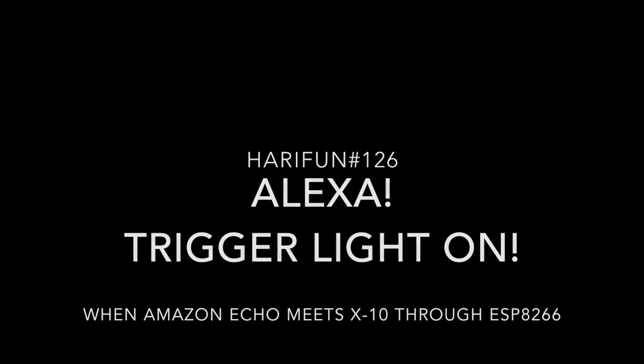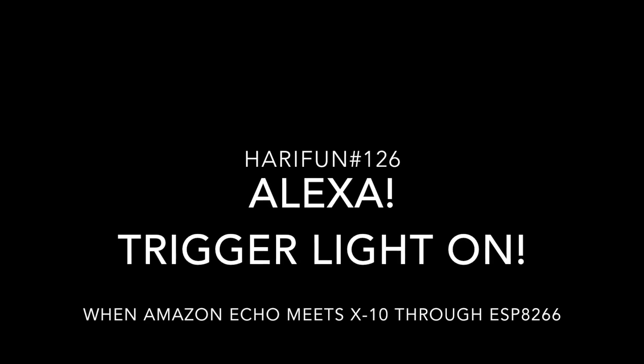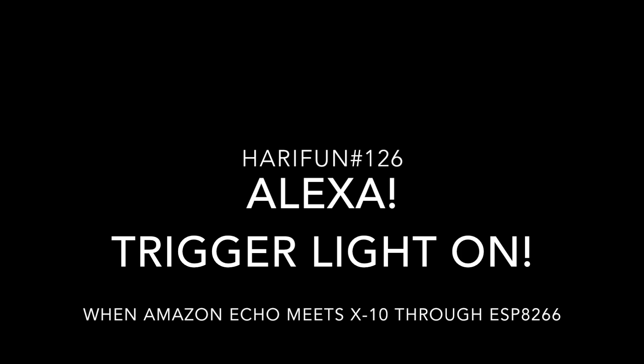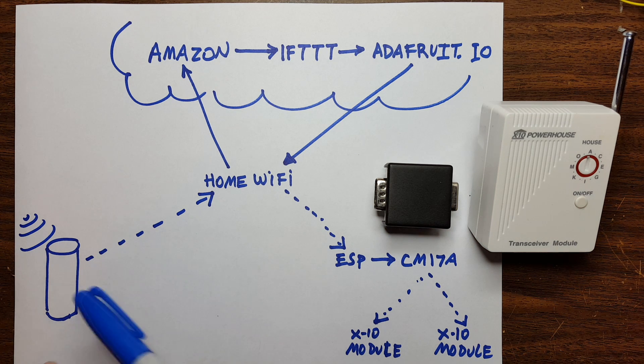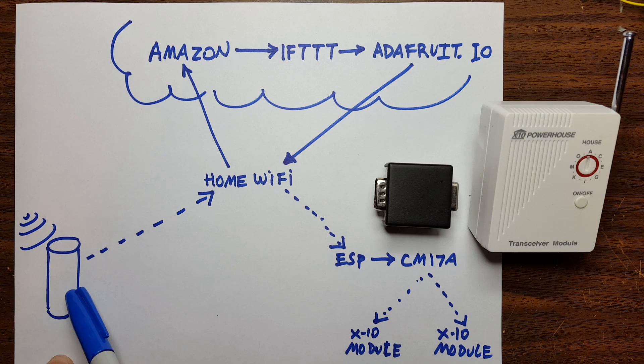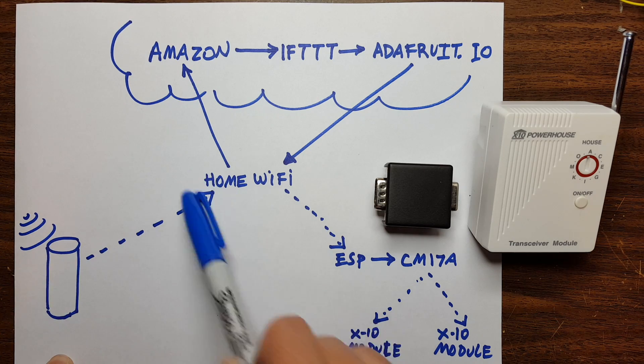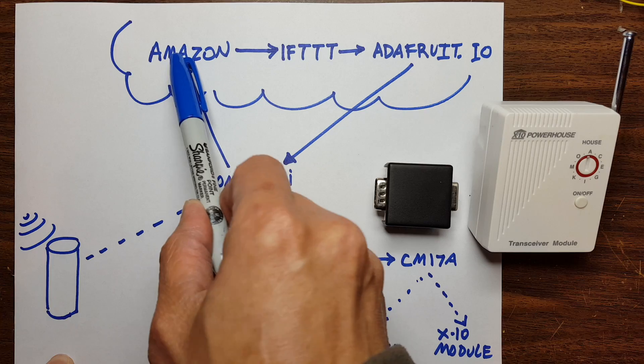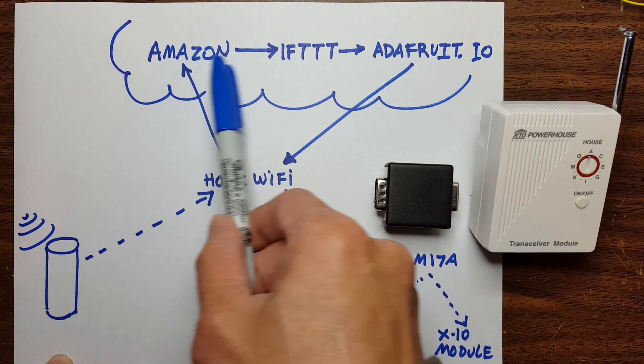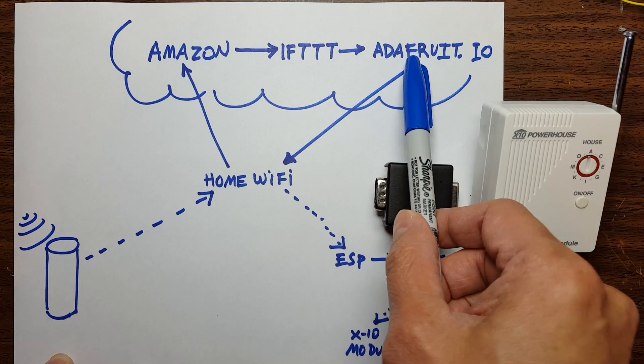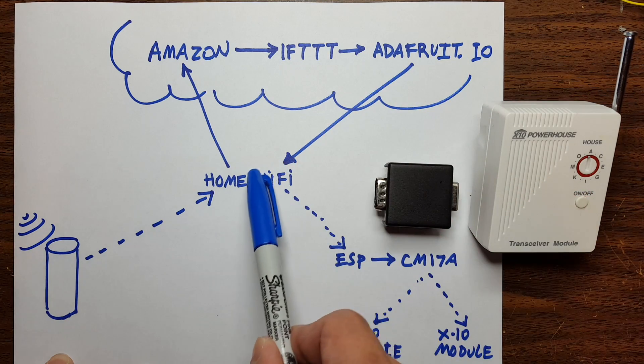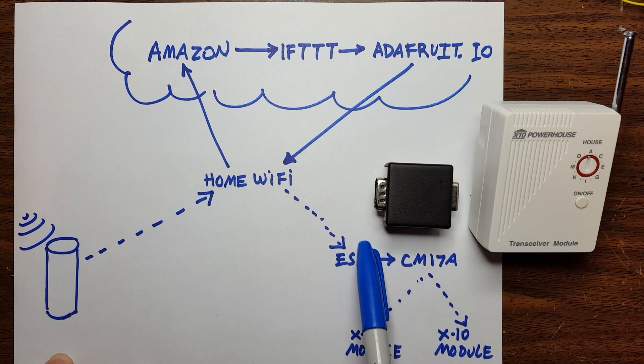In a previous video I already showed how this works. Speech coming in here into the Amazon Echo, then going through my home WiFi and sending it to Amazon. From Amazon, sending it to a service called If This Then That, and then goes to Adafruit. From Adafruit it goes back down to my home WiFi onto the ESP.